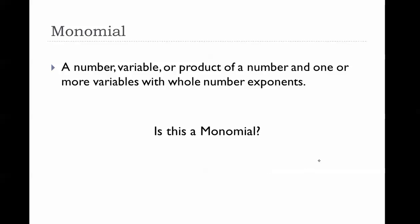Are these monomials? Five — yes, five is a monomial because it is a number. You might say there's no exponent, but there is a one. So yes, there is a whole number exponent. It doesn't have to have variables. It can be a number, a variable, or a product of numbers and variables.